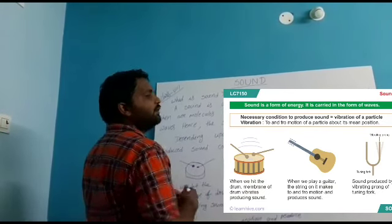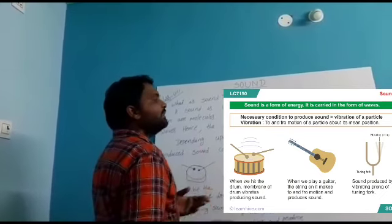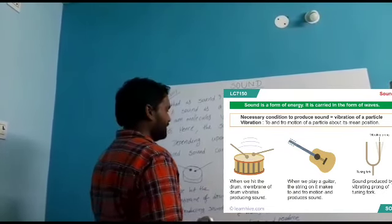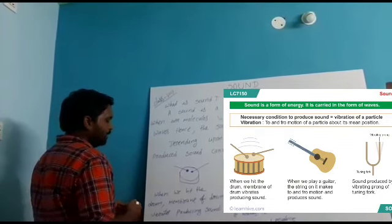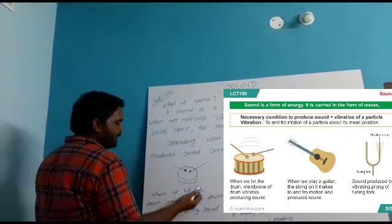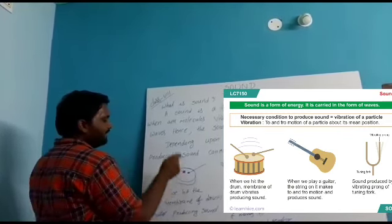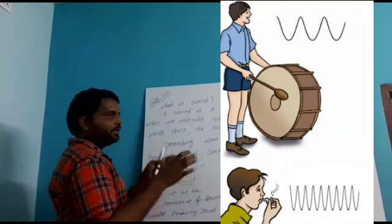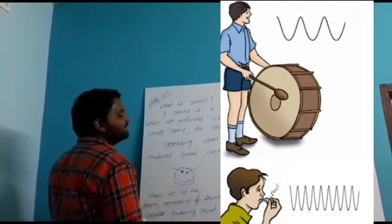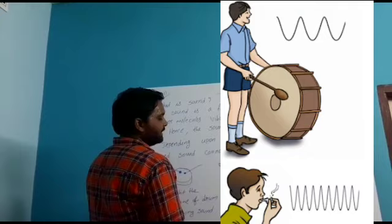Sound can never be formed without vibration. For example, one is a drum — when we hit the drum, the membrane of the drum vibrates and produces sound. Another example is a guitar — when we play guitar, the string on it makes a to-and-fro motion and produces sound.